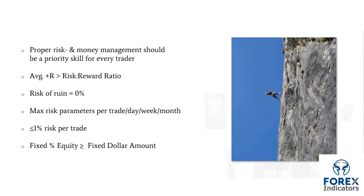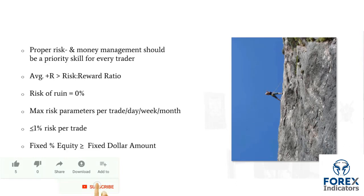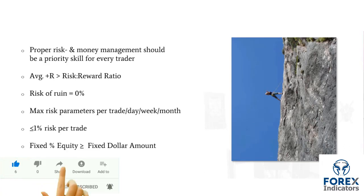The first term is average plus R and risk-to-reward ratio. The risk-to-reward ratio basically means: what is my risk in relationship to my reward? If I'm risking $10,000 on a trade and I stand to gain $20,000 if it hits my profit target, then my risk-to-reward ratio is one to two. I personally find average plus R to be a better metric than risk-to-reward ratio.